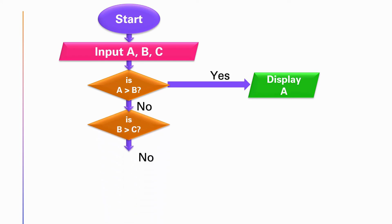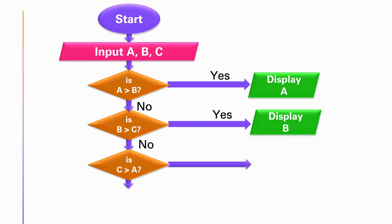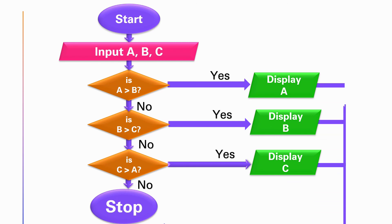Then I have taken three decision boxes. Is A greater than B? If yes, we should display A. Is B greater than C? If it is yes, I should display B. If C is greater than A, then I should display C. Finally, I should finish all my arrows, that means my signal lines, from the stop symbol. And don't forget to mention the conditions like yes, no, and everything.